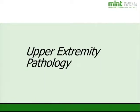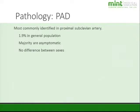That covers the basics of digital evaluation. Moving on to the upper extremity — we do some digital evaluation there as well. With peripheral artery disease, it is most commonly identified in the proximal subclavian artery, found in about 1.9% of the general population. Most of these people are asymptomatic, and there is not really any difference in prevalence between the sexes.